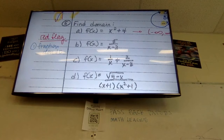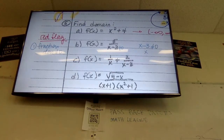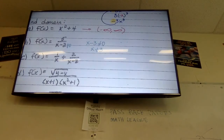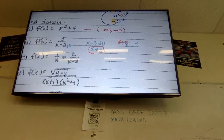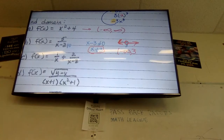For letter B: x minus 3 does not equal zero, so x cannot equal 3. In interval notation, x can be anything smaller or bigger than 3, just not 3 itself. So my domain goes from negative infinity to 3 — with a parenthesis — union — from 3 to positive infinity — with a parenthesis.